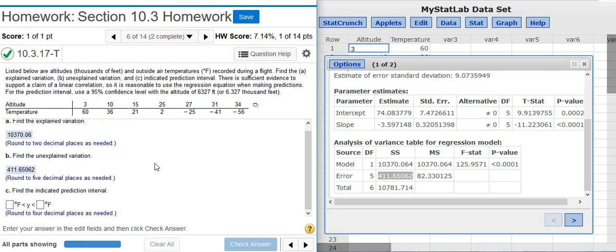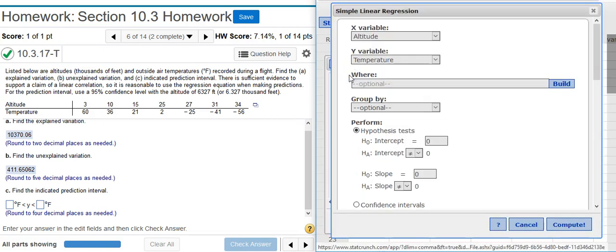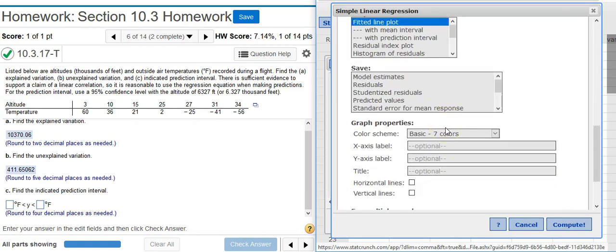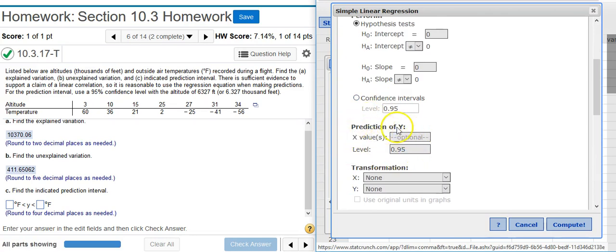And finally, we're asked for an indicated prediction interval. You can go to the results window and click on this options button. And in the drop-down menu, I click on edit. Then, if I scroll back down here in my options window, I'm looking for this area. This is prediction of Y.